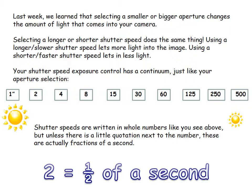The rest of the numbers on the continuum — two, four, eight, fifteen, thirty — are all fractions of a second. So two actually means one half of a second, and eight means one eighth of a second. If you see a number without quotation marks, remember that it's a fraction of a second. The sun on the right-hand side reminds you that faster shutter speeds let in less light, while the larger sun on the left indicates slower shutter speeds that let in more light.